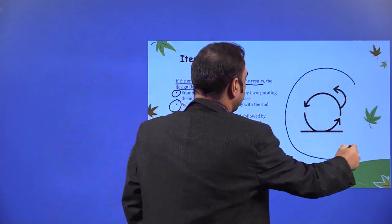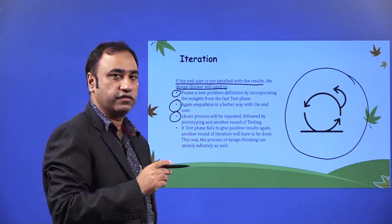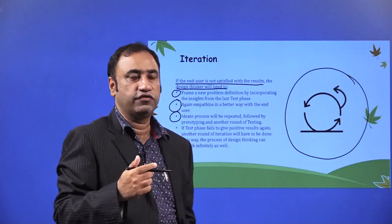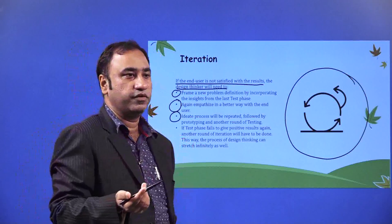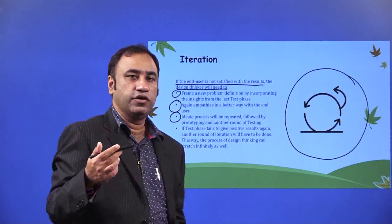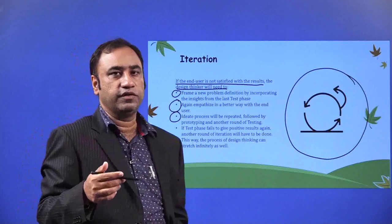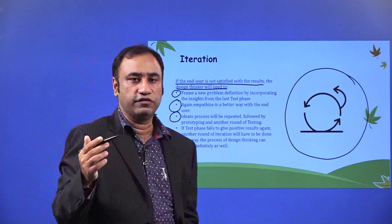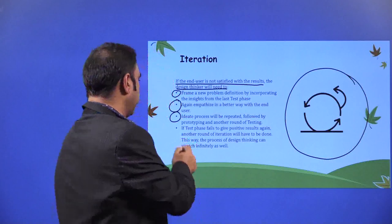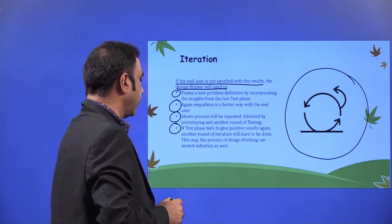This is the iteration process — based on the feedback received from the testing phase, we go back to the design thinking process and start from the empathize phase. It might not be that the entire prototype needs to be changed; there might be subtle changes which need to be taken care of. So again you need to go back to the first phase of empathize, restart your end user feedback, then come back to defining the problem, ideating the product further with new value additions, creating the prototype, and going for the testing phase again. If the test phase fails to give positive results, another round of iteration will have to be done — this way the process of design thinking can stretch infinitely as well.